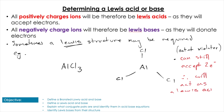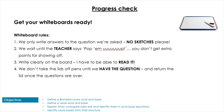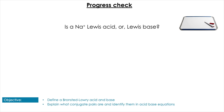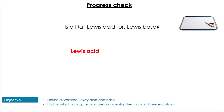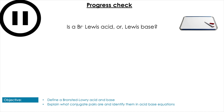Let's check understanding with quick questions. Is Na⁺ a Lewis acid or base? Pause to try. Na⁺ is a Lewis acid, since it's positively charged. Is Br⁻ a Lewis acid or base? Pause to try. Br⁻ is a Lewis base, since it's negatively charged.